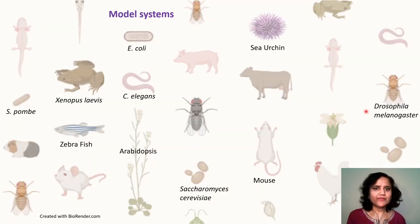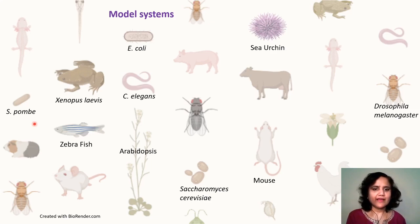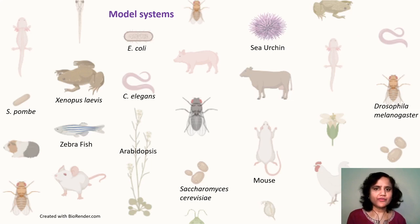Various organisms have been used for research in cell biology, starting with the bacterium E. coli, budding yeast as well as fission yeast, and various other multicellular organisms such as C. elegans, Drosophila, frogs, zebrafish, human cell lines, mice, and also Arabidopsis, which is a model plant organism. The model organism is chosen based on its suitability for the question being asked.